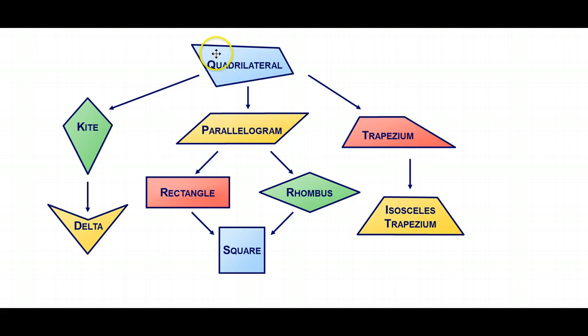So here we go, we've got a diagram. We start with quadrilaterals at the top, and that's any shape with four sides. And then as we go down, we've kind of got the family tree of quadrilaterals. So, let's have a look.